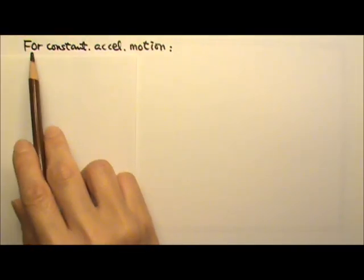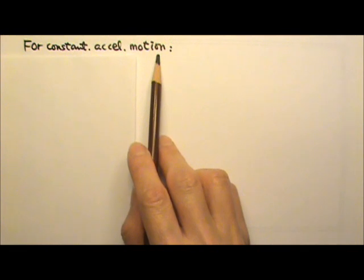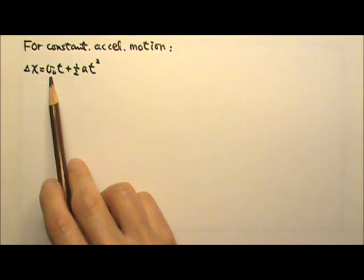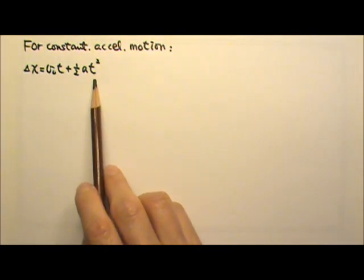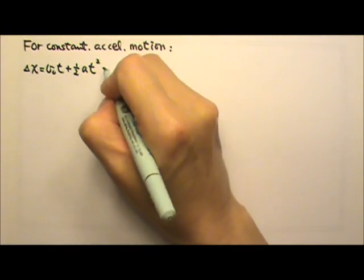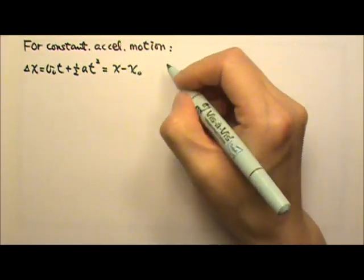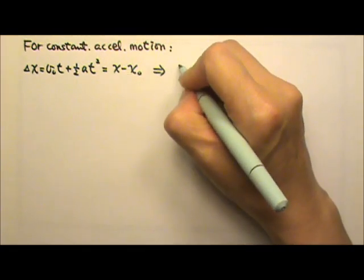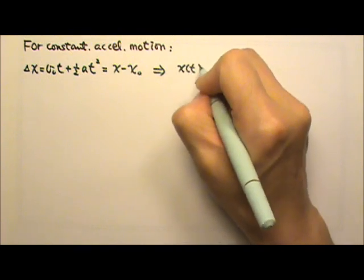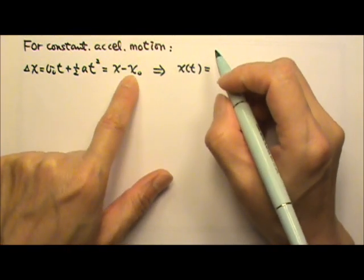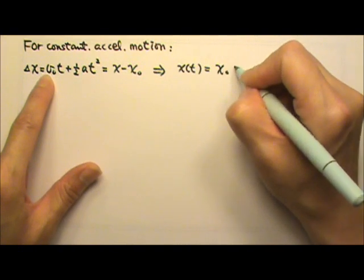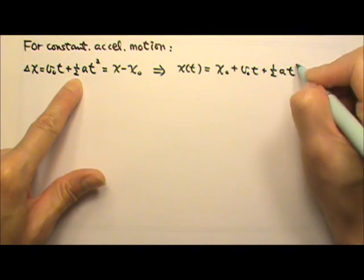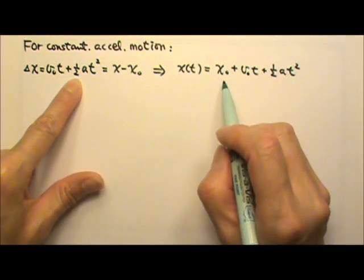Now let's look at the equations we have learned for constant acceleration motion. The equation that gives us position as a function of time is delta x equals v₀t plus one-half a t squared. Since delta x is the final position minus the initial position, if I add the initial position to both sides, I get the position as a function of time: x₀ plus v₀t plus one-half a t squared.